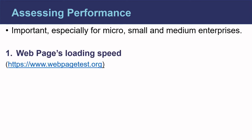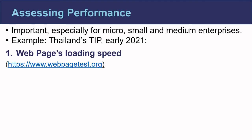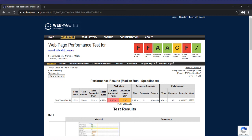This gives us several performance indicators with which to assess TIPs. Web page loading speed can be easily measured using tools like webpagetest.org. For example, here we are testing Thailand's TIP as of early 2021. Be careful when selecting a server from which to run this test, as it can radically change your results. We have some pre-agreed scoring matrix, like 5 points if the website takes less than 5 seconds to load, a score of 4 if it takes between 6 and 15 seconds, 3 if it takes 16 to 25 seconds, and so on, all the way to 0 if it takes more than 45 seconds to load. In this example, from a server in Dulles, USA, Thailand's portal takes 9.2 seconds to load, so using the scoring matrix suggested in Annex A of the SGAP ITD Guide, we would give it a score of 4.